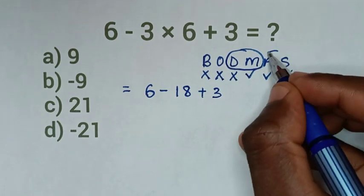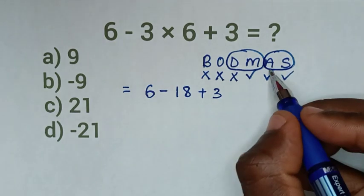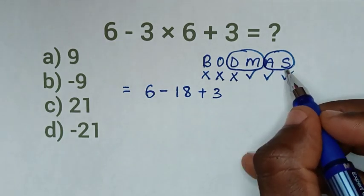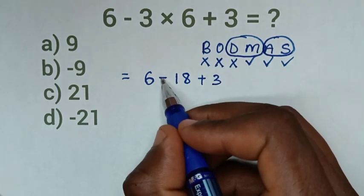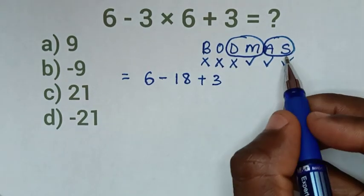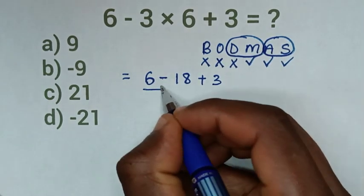Then from here, addition and subtraction operations we'll solve according to what starts first. In here it starts with subtraction, then addition. So we'll start with subtraction, then addition, from left to right.